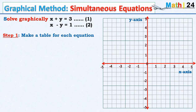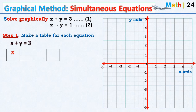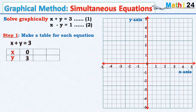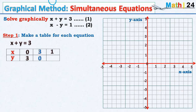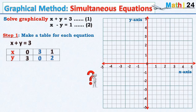The first step is to make a table of values for each equation. For the first equation we have a table of values for x and y, and we take values very close to the origin, very close to zero. Let us start by choosing arbitrary values. If x equals zero then y will be equal to three. If y equals zero then x will be equal to three. If x equals one then one plus y gives us three, therefore y must be two.